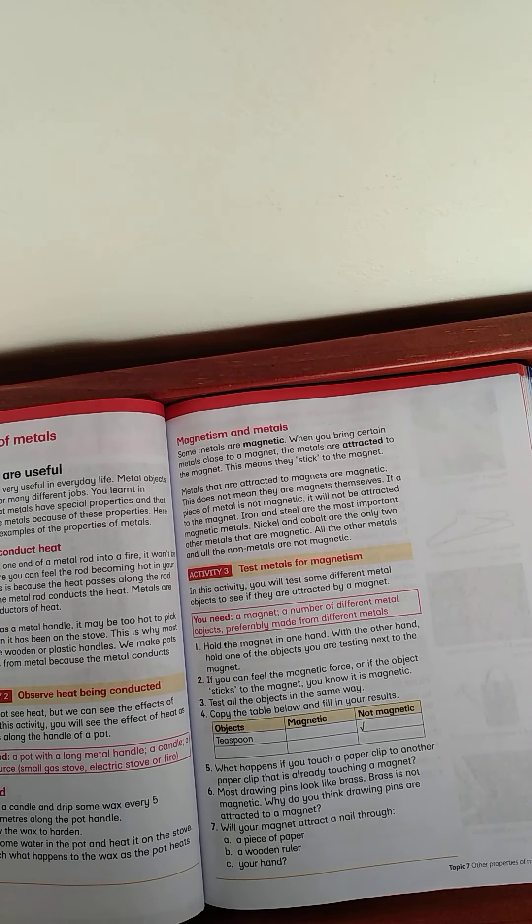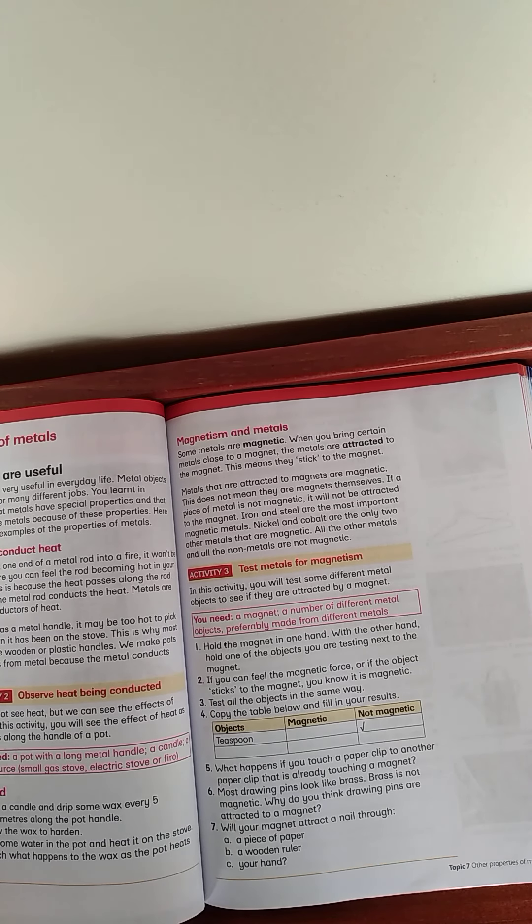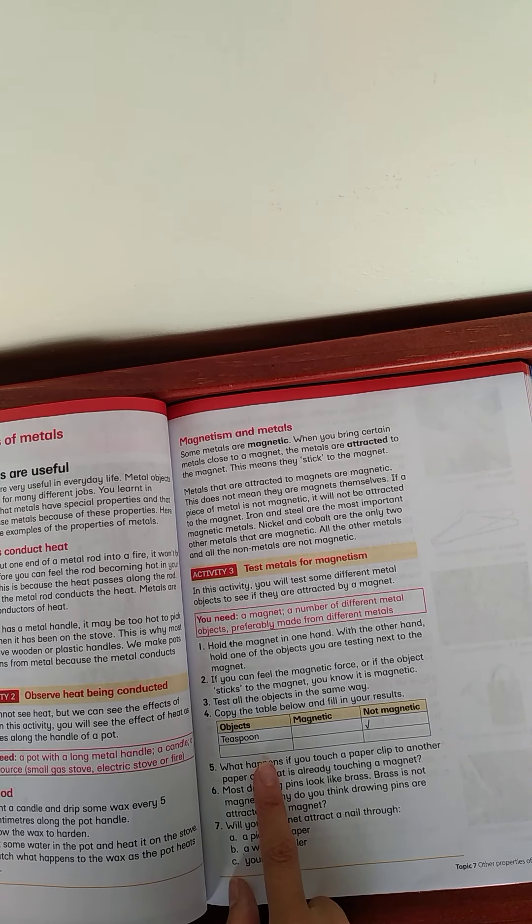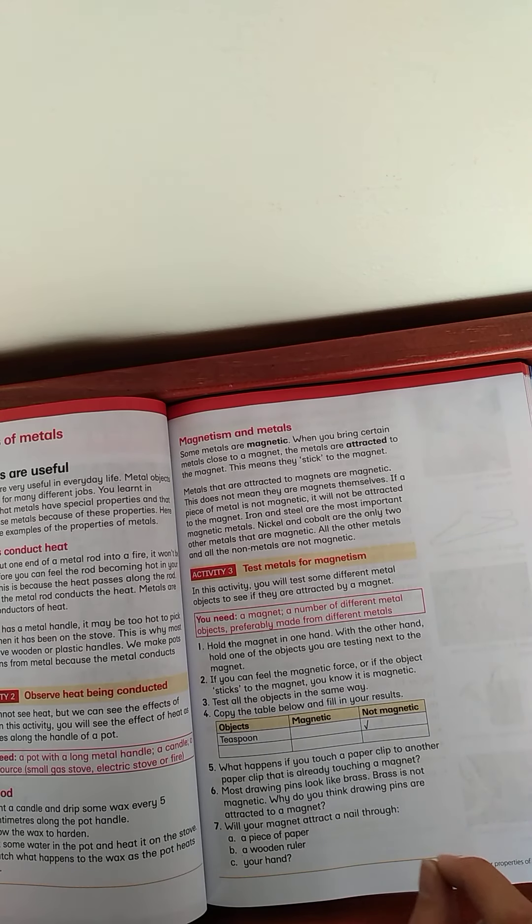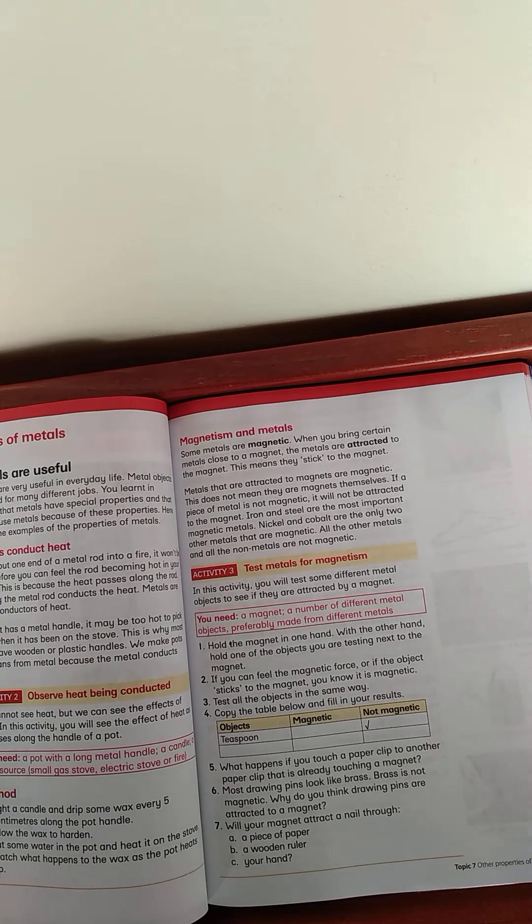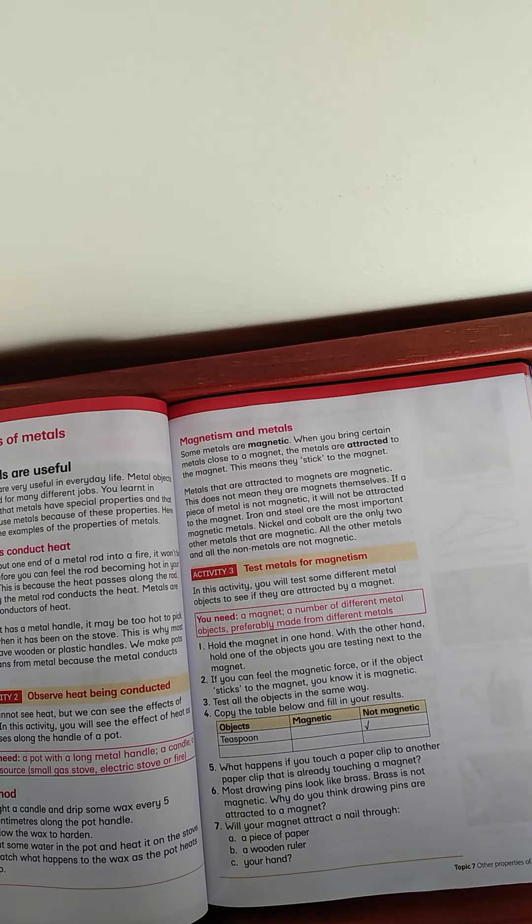So, hold the magnet in one hand. With the other hand, hold the other objects you are testing next to the magnet. If you can feel the magnet force, or if the object sticks to the magnet, you know that it is magnetic. Test all the objects in the same way. This table is in your purple file already done for you. So, just check and then you can just take a teaspoon and any other objects, at least five objects, different objects. And if it's magnetic or not, just tick.